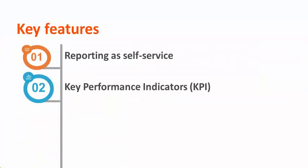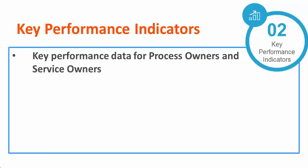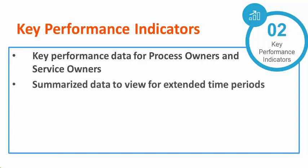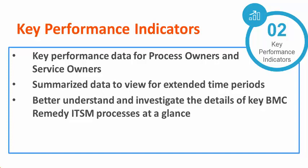Key performance indicators enable process owners and service owners to understand and investigate performance of key ITSM processes at a glance. Ajay, the process owner, can use the KPI-based reporting options to view data for a longer period of time. He can view reports like summarized data for a quarter, MTTR metrics, first call resolution success rate, or trend of emergency changes for a quarter. He can review these reports to analyze and compare the data over longer periods of time.